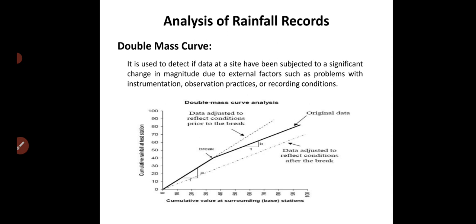There are also the mean arithmetic method and probable maximum precipitation method, which we will see in the next lecture to conclude Unit 1. After that we will start with runoff calculations — how to measure runoff. In the next lecture we will solve numericals related to rainfall calculation, missing rainfall data, and analysis of rainfall measurements. Thank you, and please mark your attendance in the comment box.